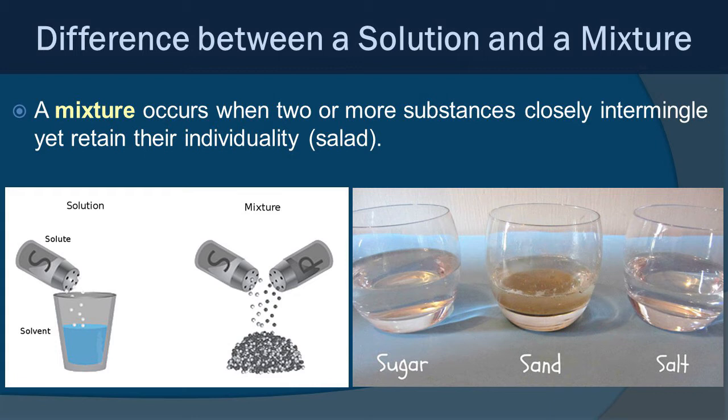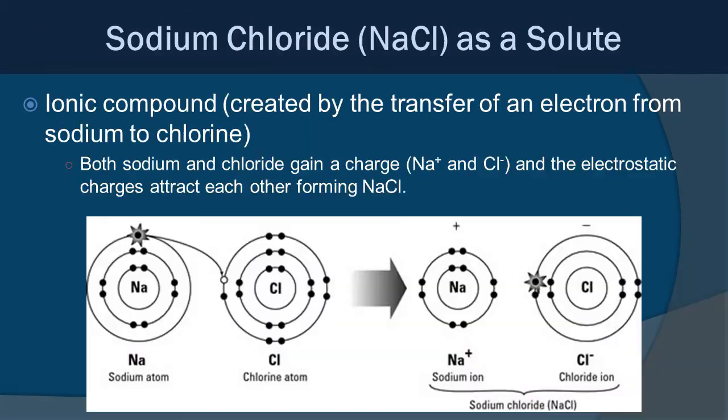There is a difference between a solution and a mixture. A mixture occurs when two or more substances closely intermingle yet retain their individuality — like a salad where lettuce, croutons, and onions all remain their individual selves. An example in water would be sand, which for the most part doesn't dissolve. But if you put sugar or salt in water, they completely disappear — you can no longer see the individual grains. That's the difference between a solution and a mixture.